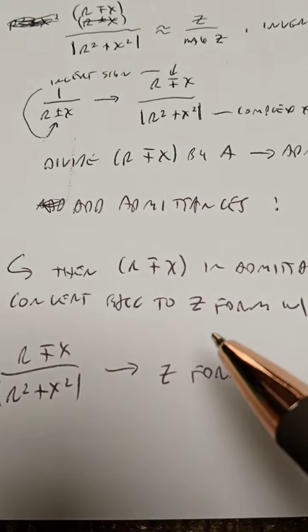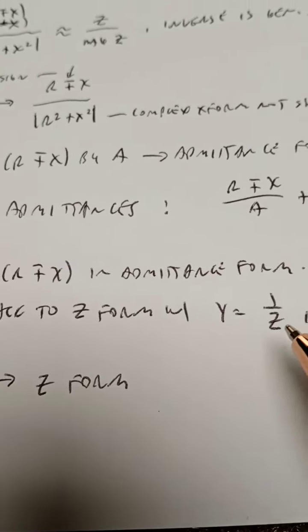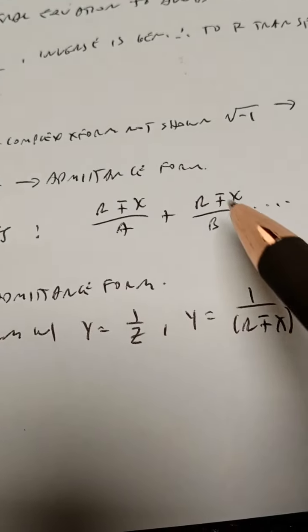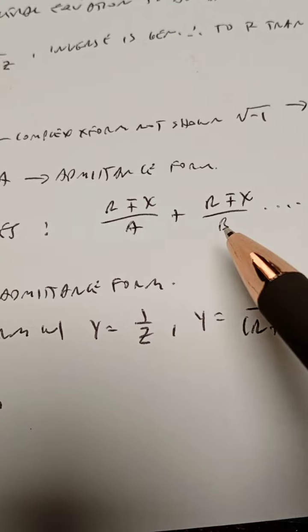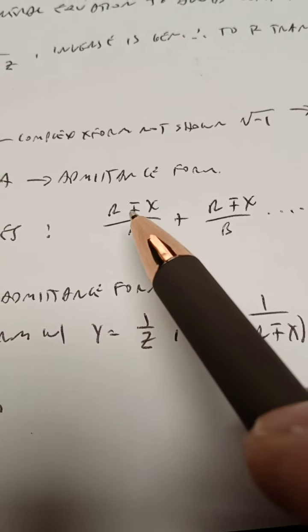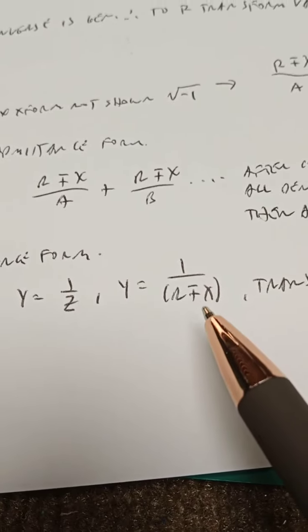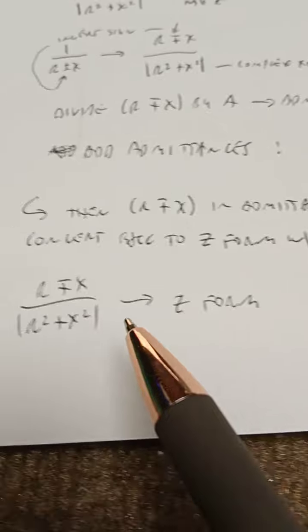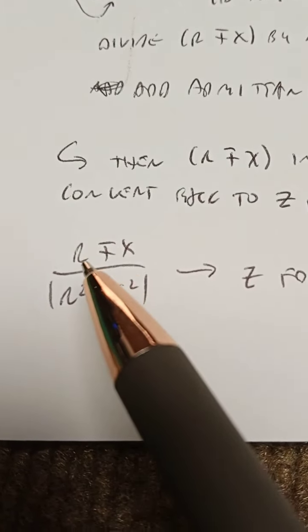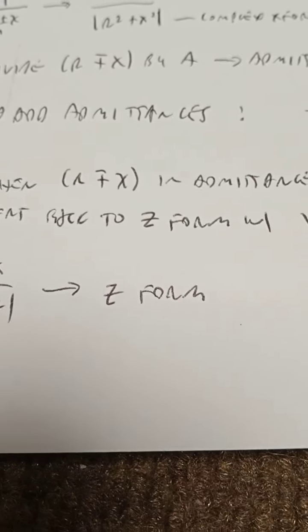Then we have the R minus or plus X in admittance form. Well, we can't do anything with that. We've got to convert it back to impedance form with Y equals 1 over Z. So take the result of this, after making the denominators the same and dividing that into the numerators, add that together. Y equals 1 over R minus or plus X, and transform again by our little magic formula, R minus or plus X over the magnitude of the squares. That puts it in impedance form.